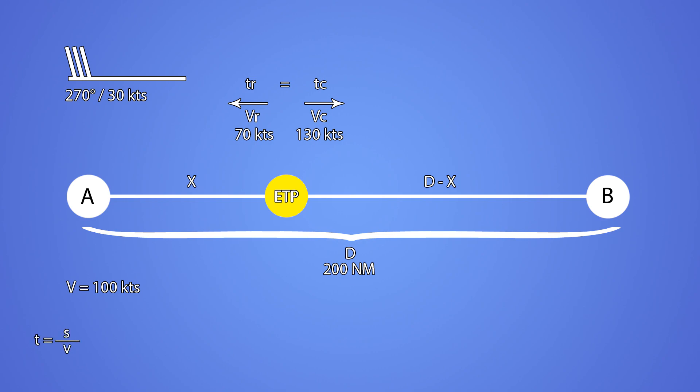So, to return, we need to cross distance x with the speed of Vr, or to continue we need to cross distance d minus x with the speed of Vc.